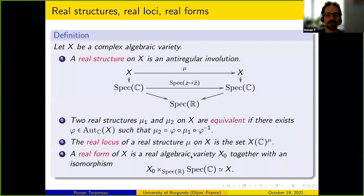There is also a notion of real form. A real form of a complex algebraic variety X is a real algebraic variety X0 together with an isomorphism. Most of the time when you talk about a real form, you just mention X0 and forget about the isomorphism, but you have to keep in mind that a real form is really a pair.